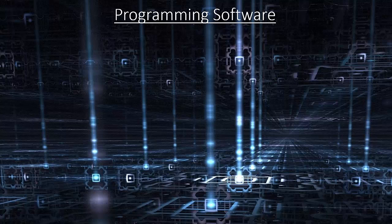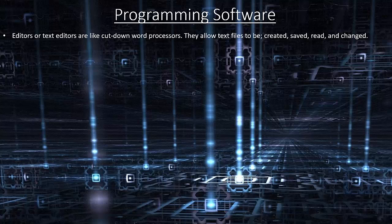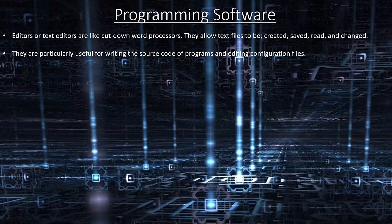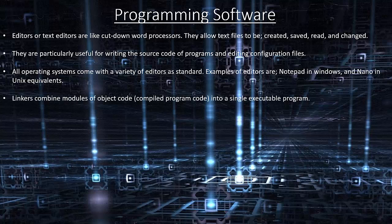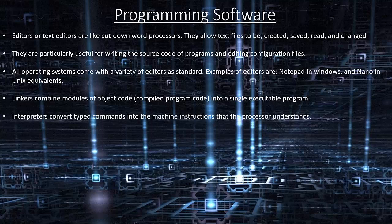Programming software. Editors or text editors are like cut-down word processors. They allow text files to be created, saved, read and changed. They are particularly used for writing source code and editing configuration files. All operating systems come with a variety of editors as standard; examples include Notepad in Windows and nano in Unix. Linkers combine modules of object code, compiled program code, into a single executable program. Interpreters convert typed commands into the machine instructions that the processor understands.